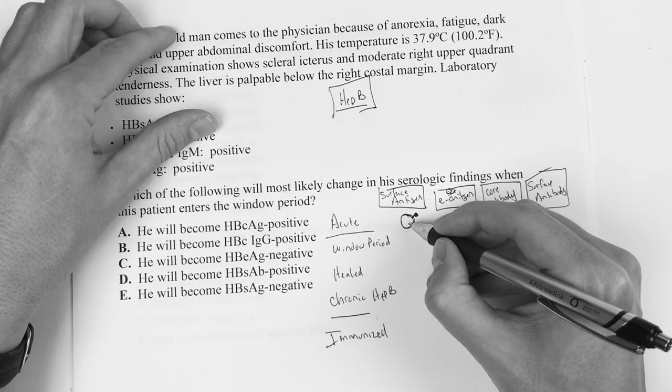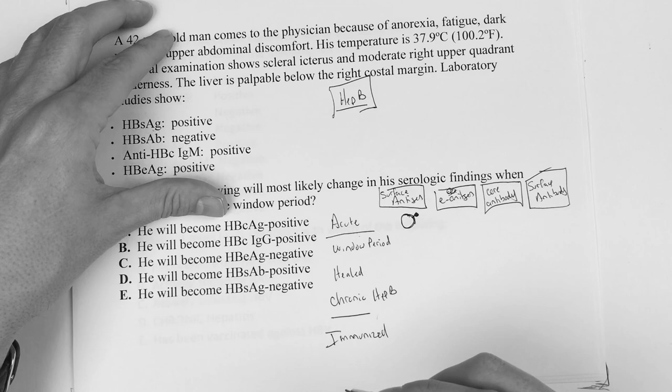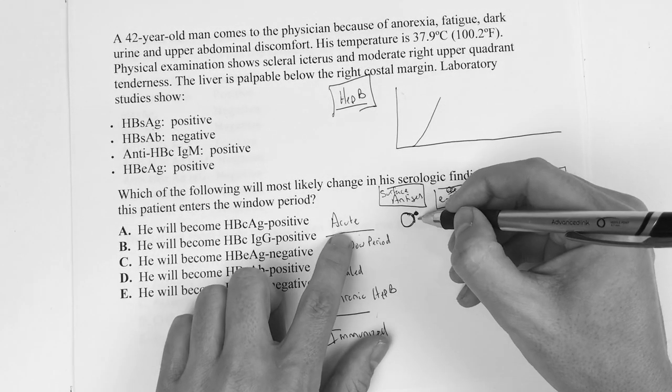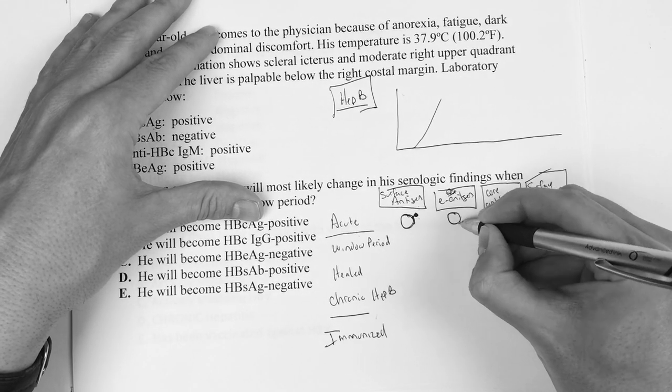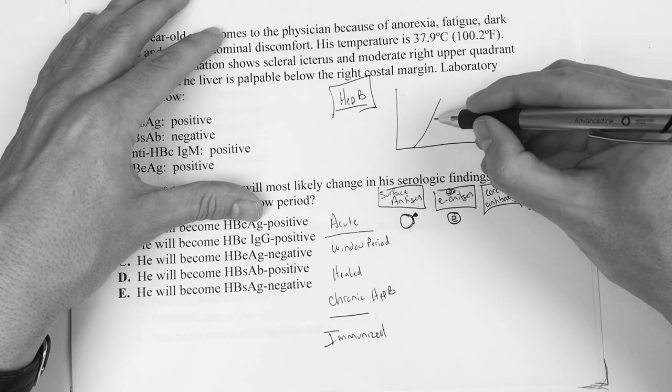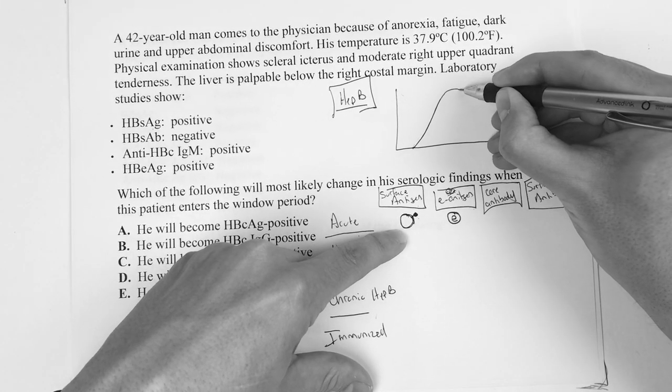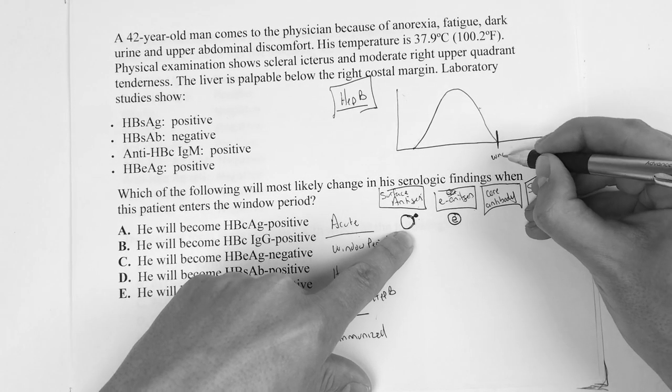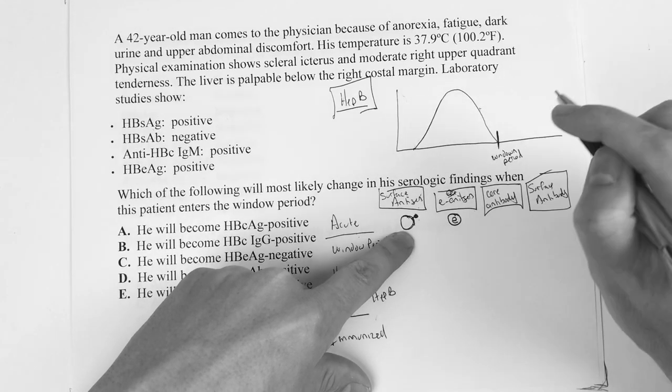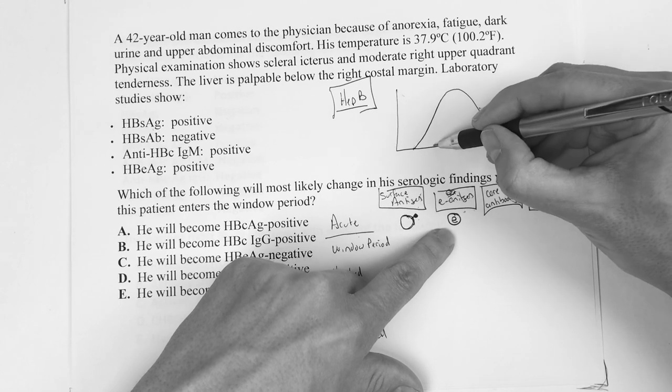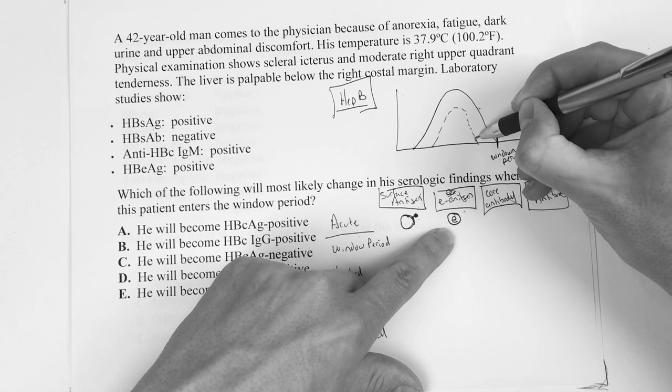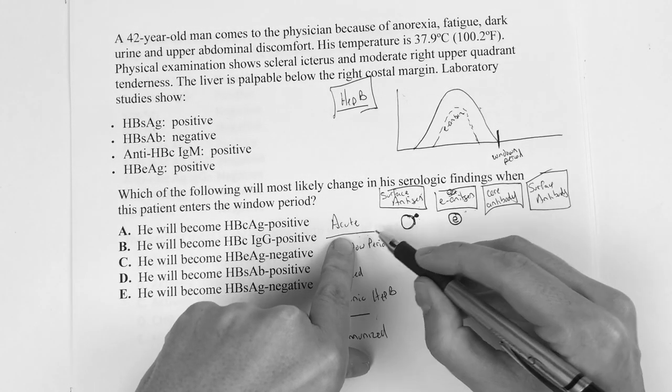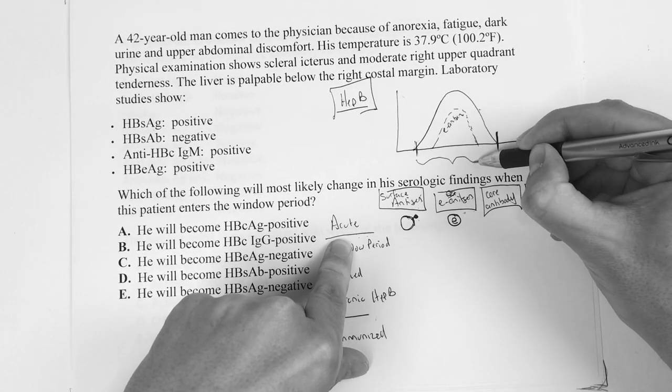In the acute phase, when things just start out, you have this cell and there's this antigen on it - the bad guy on the cell. That's the first thing that goes up. If you were looking at a timeline, the first thing that's going to rise up is going to be that surface antigen. Then you have this thing called the E antigen.